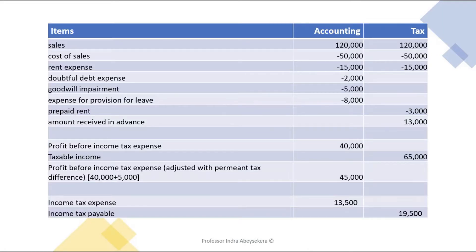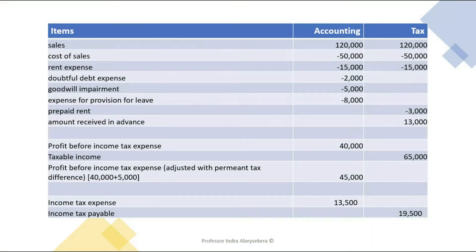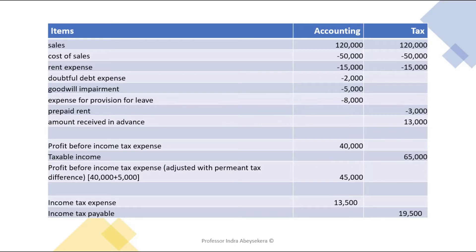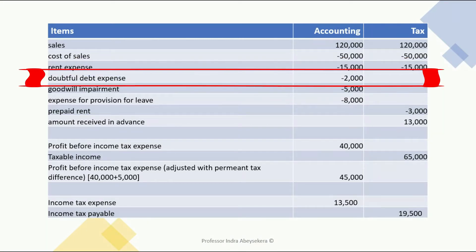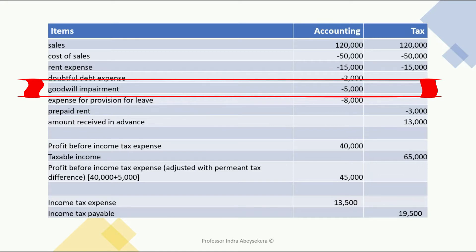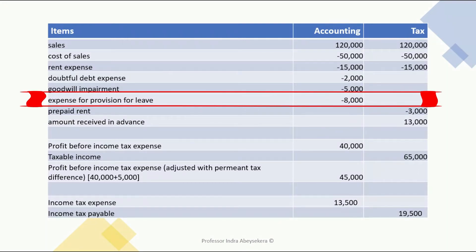Looking at the data: sales are cash sales, $120,000 for accounting and the same $120,000 as assessable income for tax. Cost of sales is $50,000 and is deductible for tax. Rent expense paid in cash is $15,000 and deductible for tax. Debt expense of $2,000 is not deductible for tax because it is a notional expense. Goodwill impairment of $5,000 is not deductible for tax — it is also a notional expense.